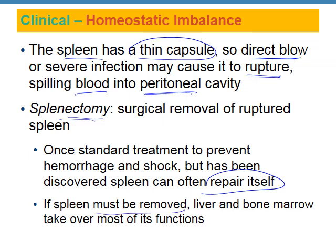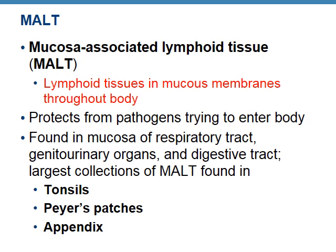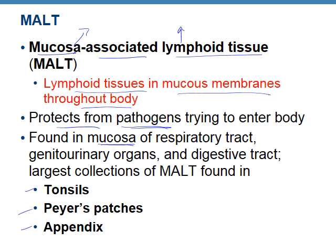If you have to remove the spleen, usually the liver and bone marrow can take over most functions — it's not the end of the world, but it's there for a reason. We can survive without it, but it still has a purpose. MALT — mucosal associated lymphoid tissue — is lymphoid cells in areas with a mucosal lining. Lymphoid tissues in mucosal membranes throughout the body include tonsils, Peyer's patches, and the appendix, protecting against pathogens entering the body through mucosal areas.